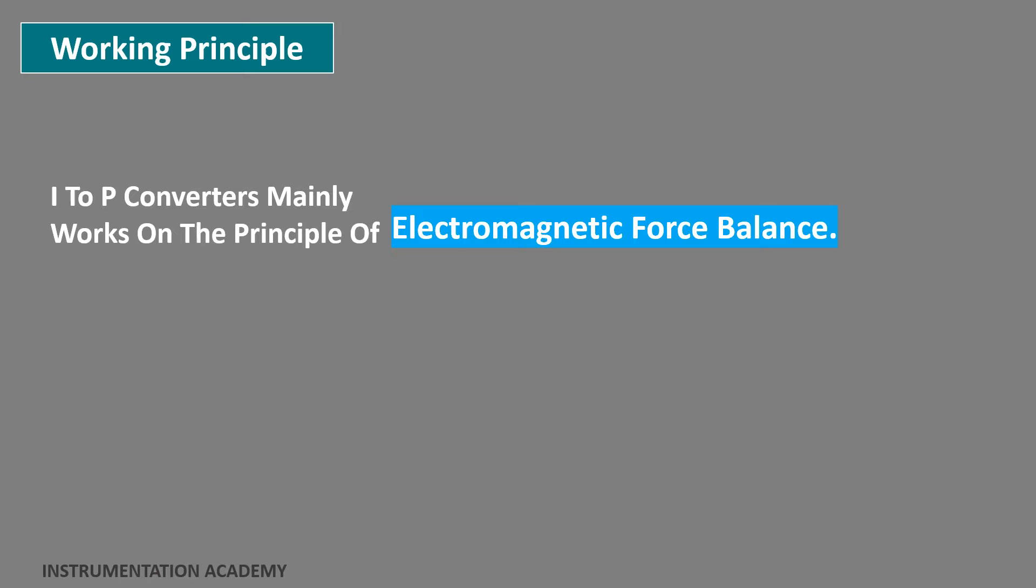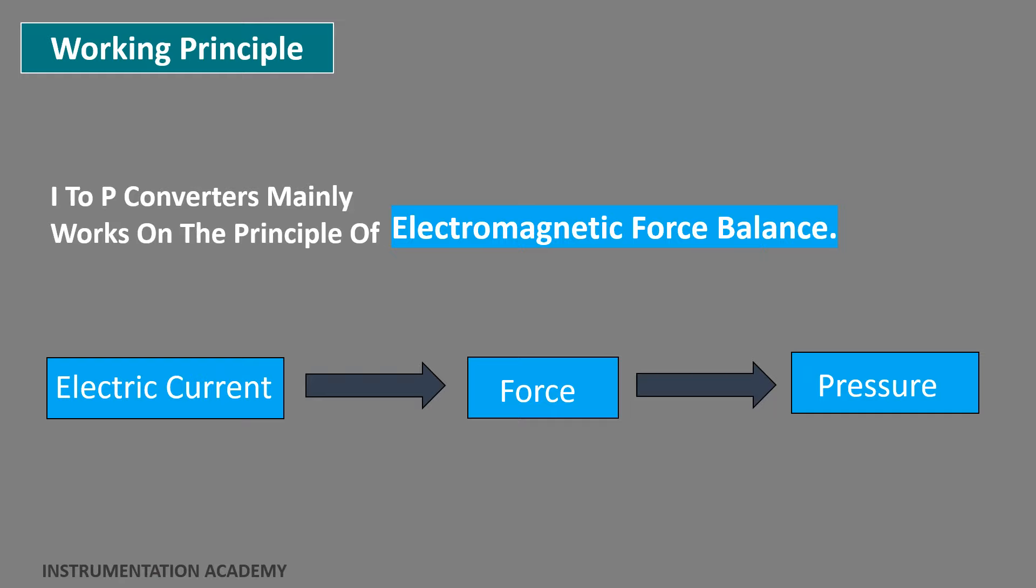Working principle of I2P converters: Current to pressure converters mainly work on the principle of electromagnetic force balance, that is, the process of converting electric current into force and then to pressure. There are many designs for I2P converters, but the basic working always involves the use of a nozzle flapper system arrangement.